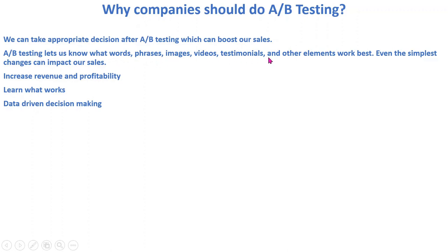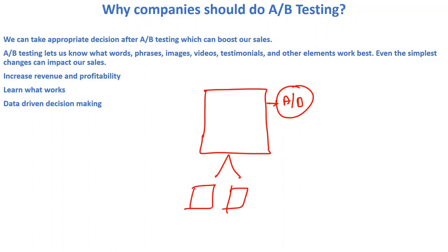A/B testing lets us know what words, phrases, images, videos, testimonials, or any other element works best. For example, if you want to test your website you create two versions — version A and version B. In version A you use certain words and formatting; in version B you use different words and a different subject line or image. We need to test these different elements across versions.